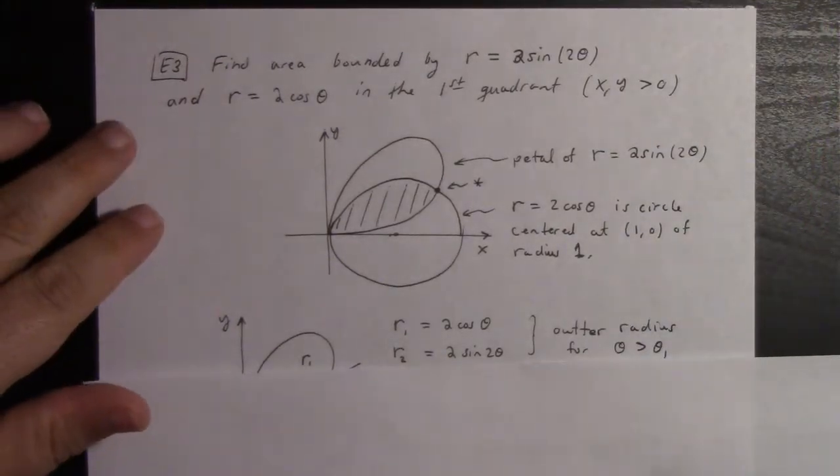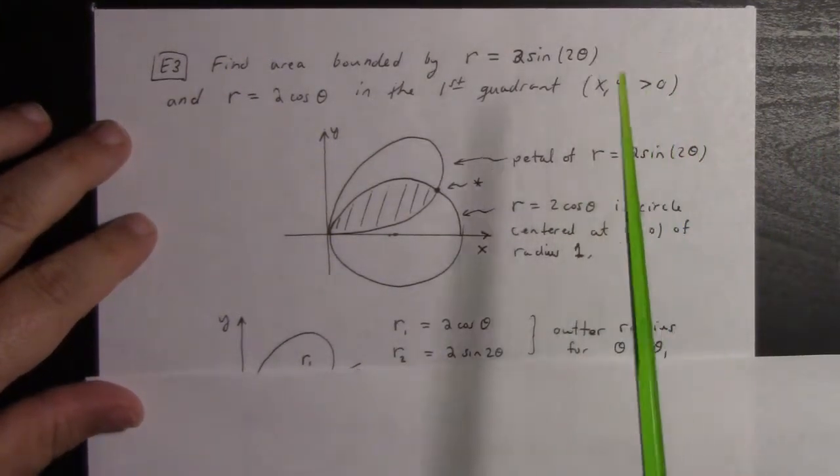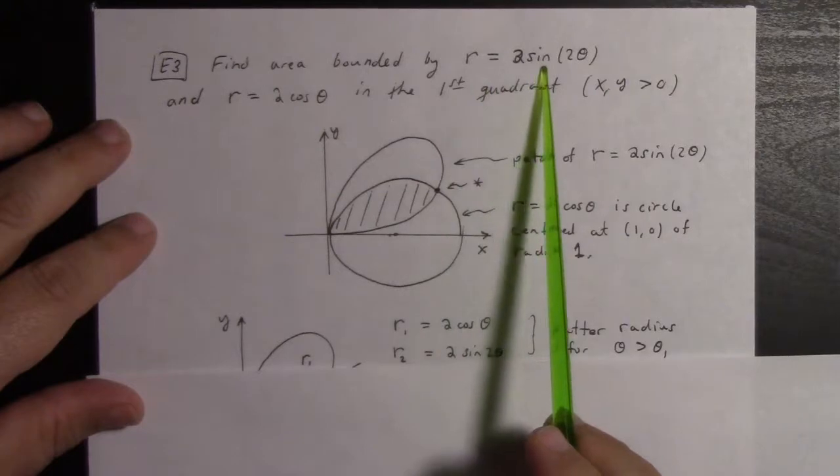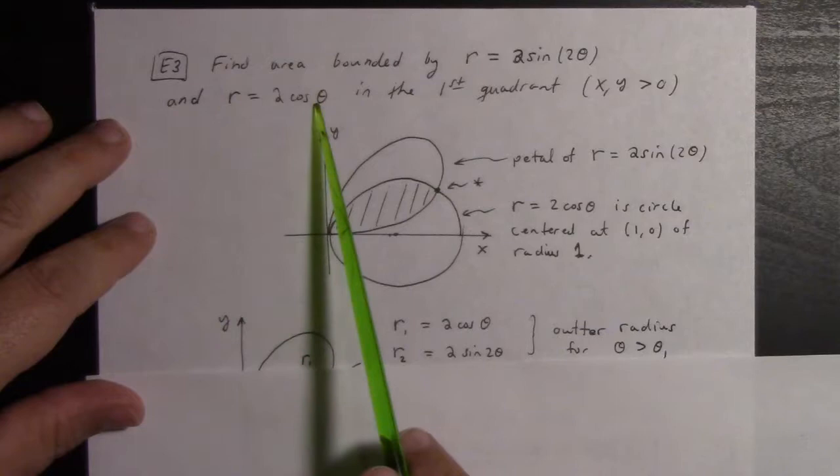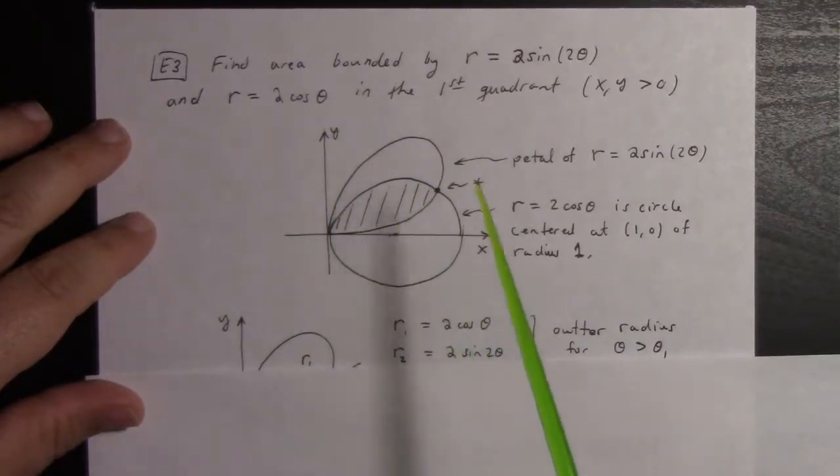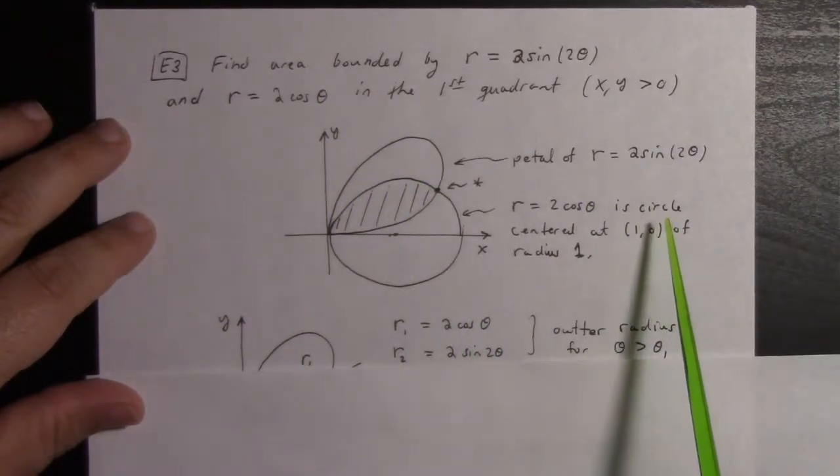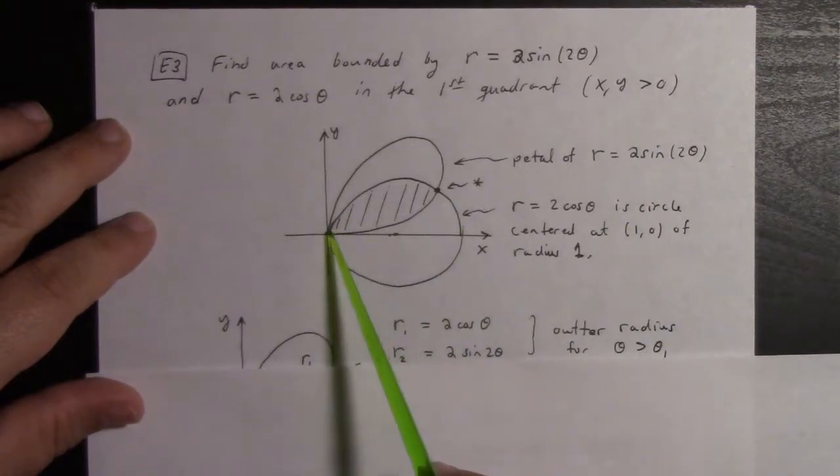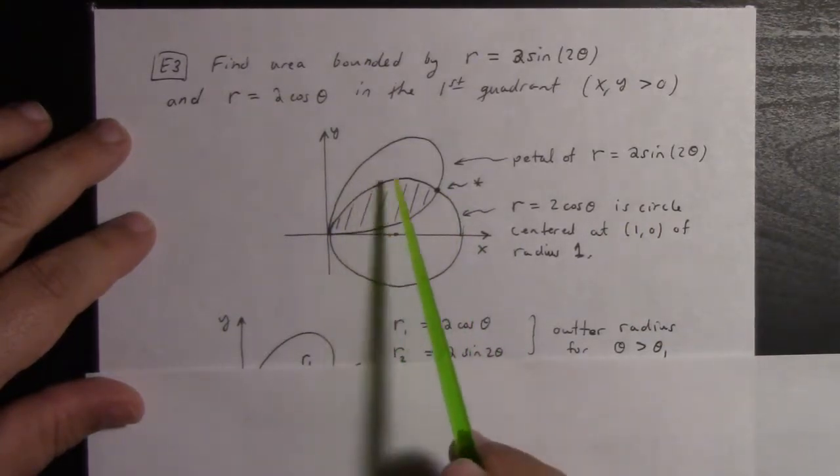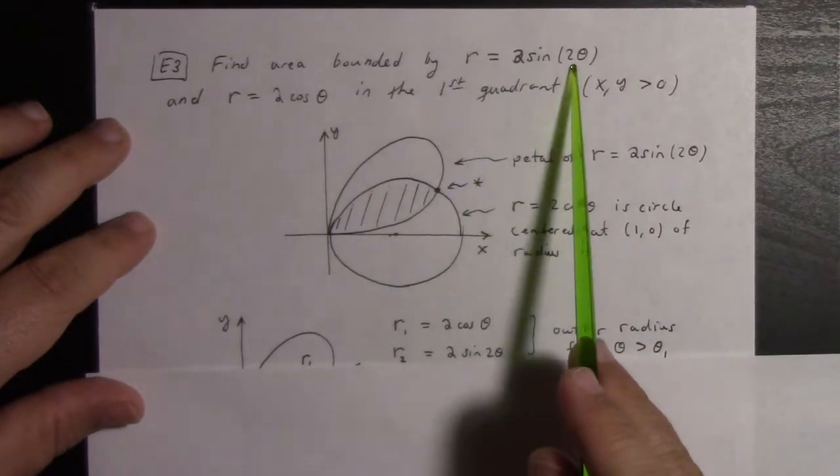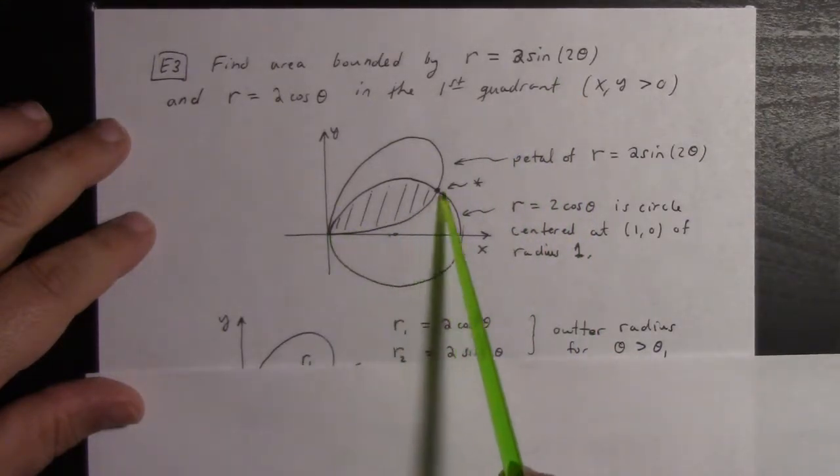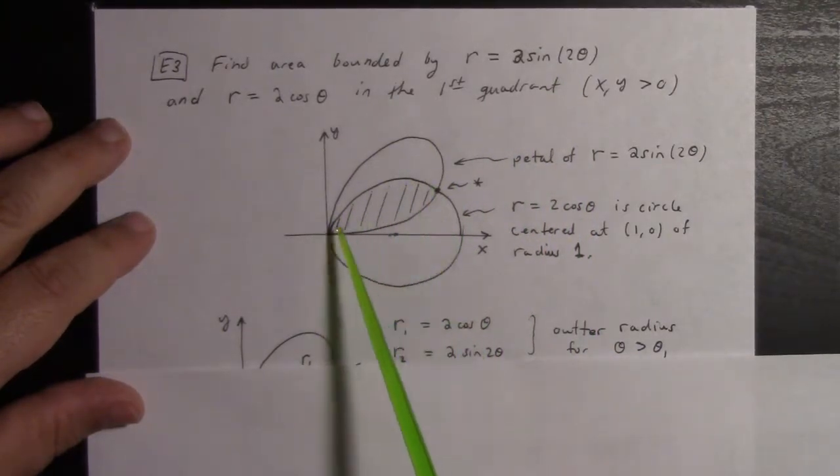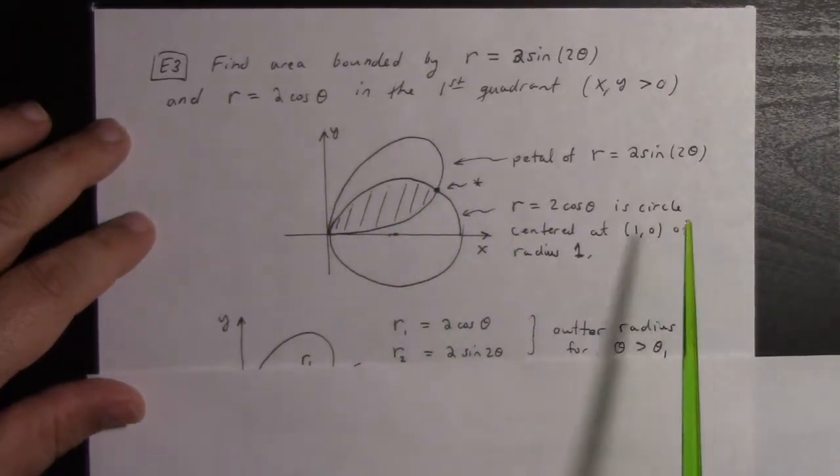Here's finding the area bounded by something interesting. I look at r = 2sin(2θ) and r = 2cos(θ). Now, r = 2cos(θ) is a circle—we looked at that earlier—centered at (1,0) with radius 1. And r = 2sin(2θ) is one of those four-petal flowers. In between those in the first quadrant, we have this region right here.